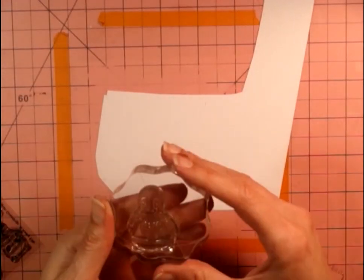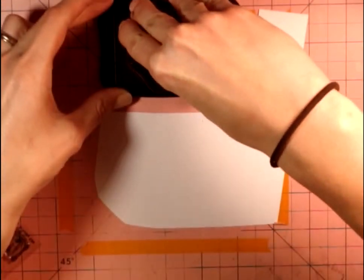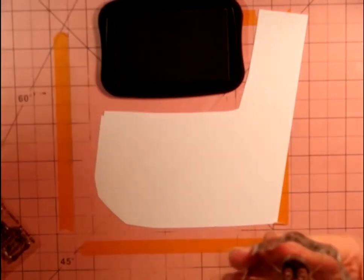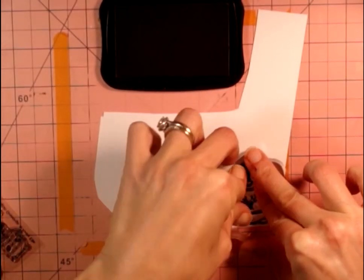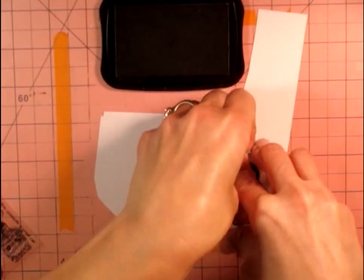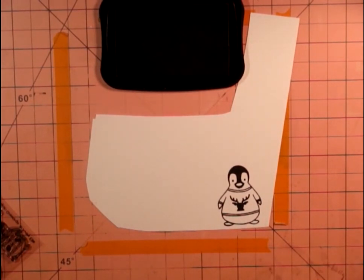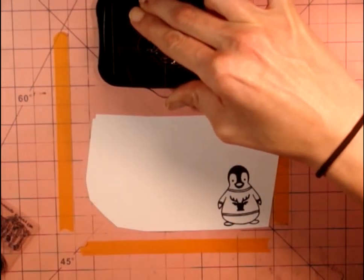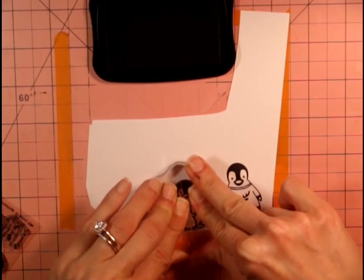And I'm using Express It blending paper stamping and memento tuxedo black ink to color. Isn't that penguin so cute? Oh my gosh. I really love this stamp set.